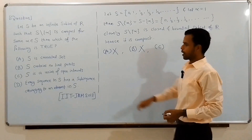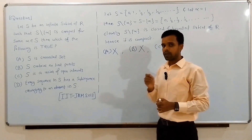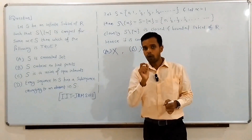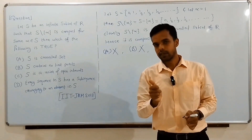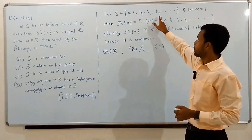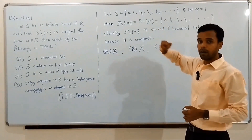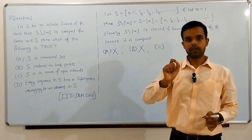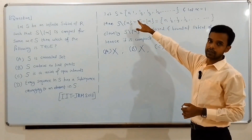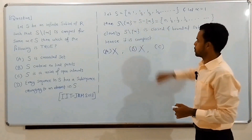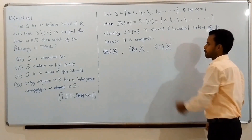Option C states that S is a union of open intervals, which is also wrong. Every non-empty open interval contains an irrational point, so if S were a union of open intervals it would contain irrational points. But S clearly contains only rational points, so S cannot be written as a union of open intervals. Option C is wrong.